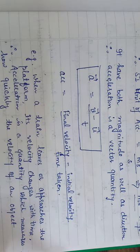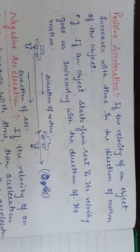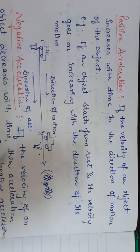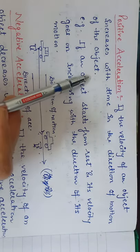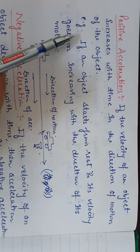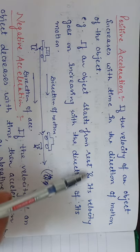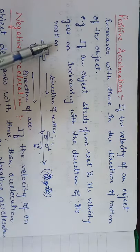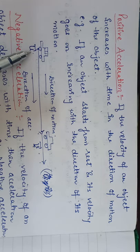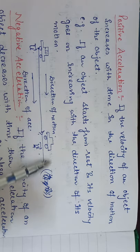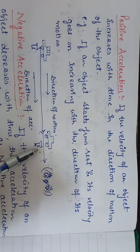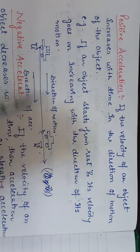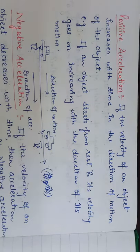There is a change in velocity with respect to time. Acceleration is a quantity which measures how quickly the velocity of an object changes. Now we have types of acceleration. The first one is positive acceleration — if the velocity of an object increases with time in the direction of motion, such acceleration is known as positive acceleration. For example, if a car starts from rest and its velocity goes on increasing in the direction of its motion on a straight path, its final velocity is greater than its initial velocity, then the acceleration is said to be positive.